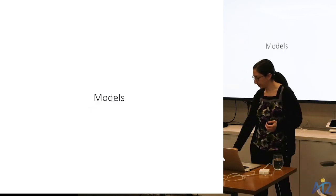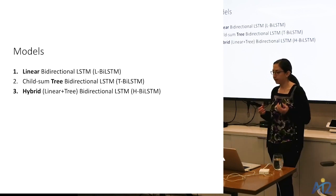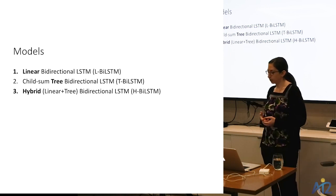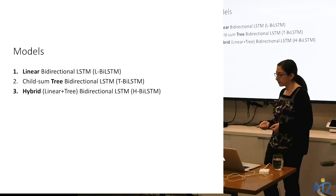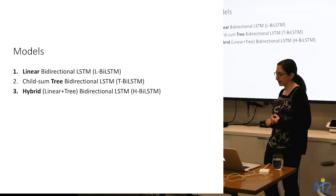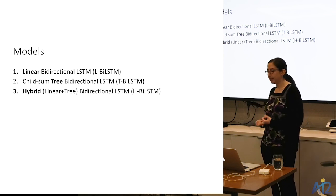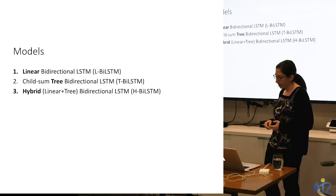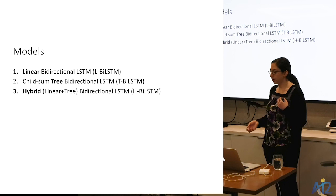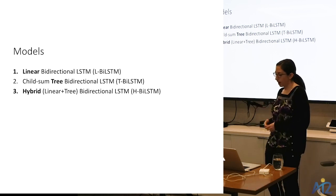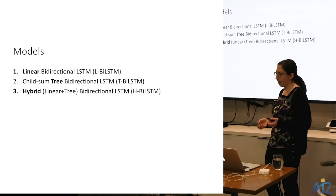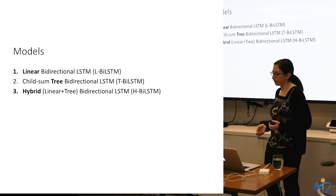The models I developed for event factuality prediction investigate whether recurrent neural networks can learn to do event factuality prediction and how the topological structure of the network affects performance. The three models are: a linear bidirectional LSTM, a child-sum tree bidirectional LSTM, and a hybrid bidirectional LSTM combining both. The idea is not to create an entirely new architecture from scratch, but to combine and extend known architectures in a way sensible given what we know from linguistics about event factuality.